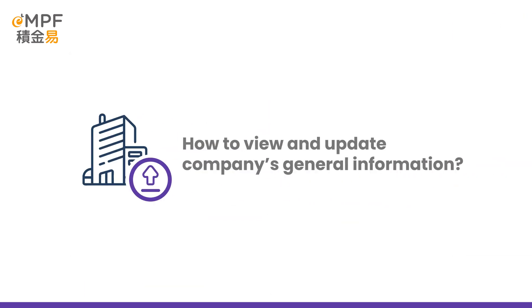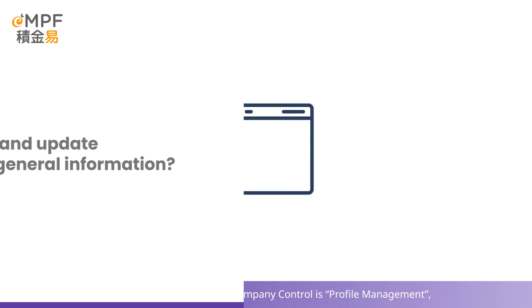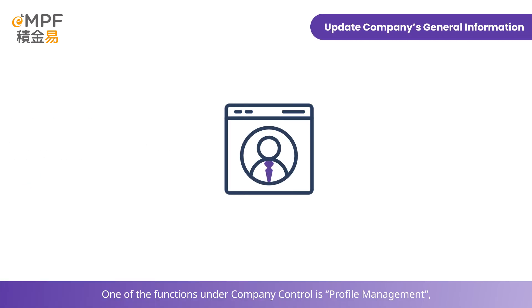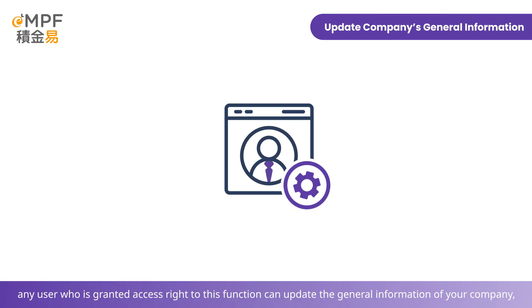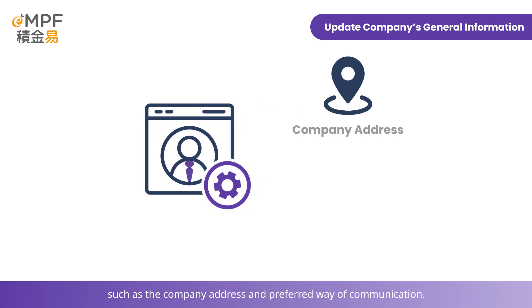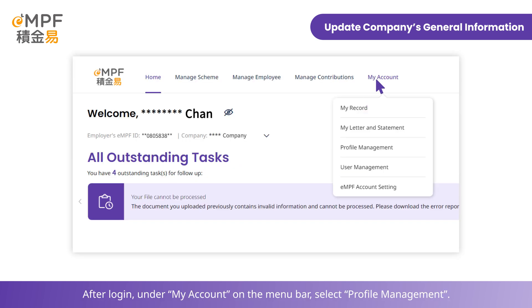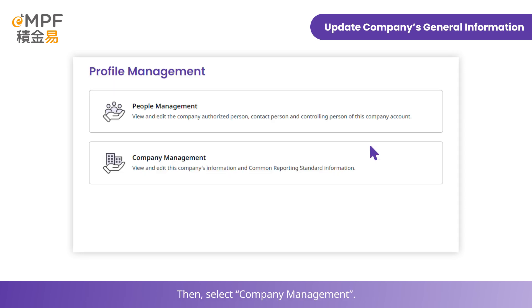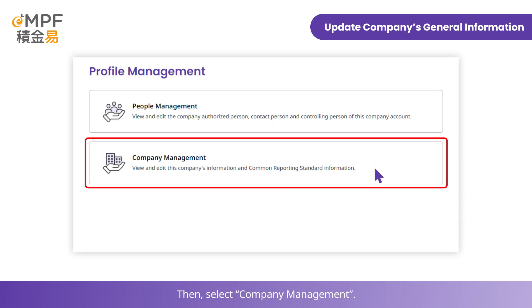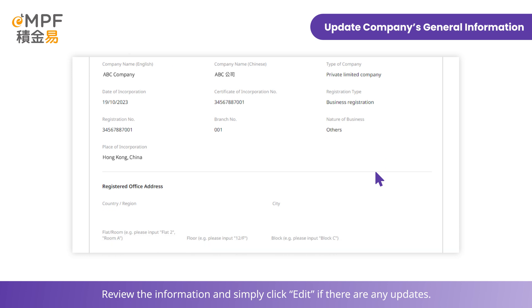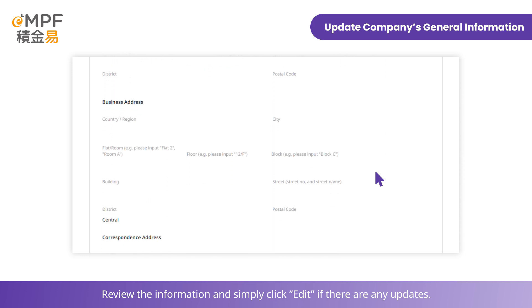How to view and update the company's general information. One of the functions under company control is Profile Management. Any user who is granted access rights to this function can update the general information of your company, such as the company address and preferred way of communication. After login, under My Account on the menu bar, select Profile Management, then select Company Management. Review the information and simply click Edit if there are any updates.